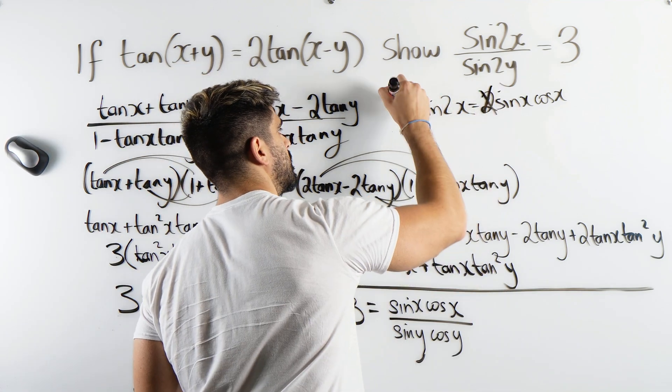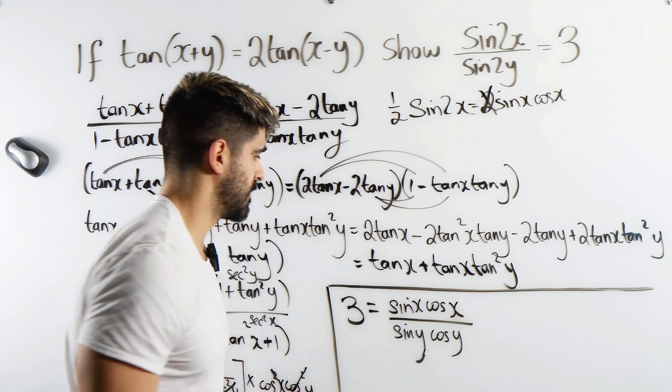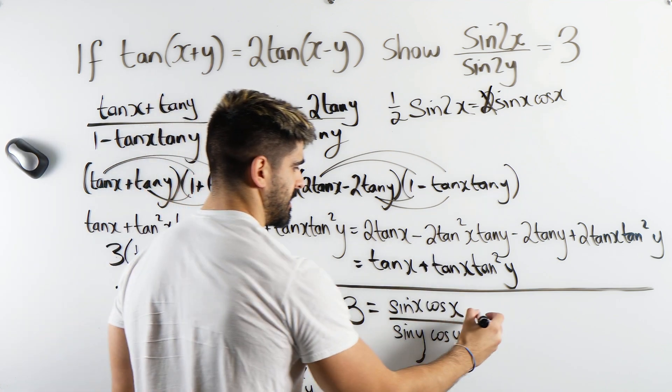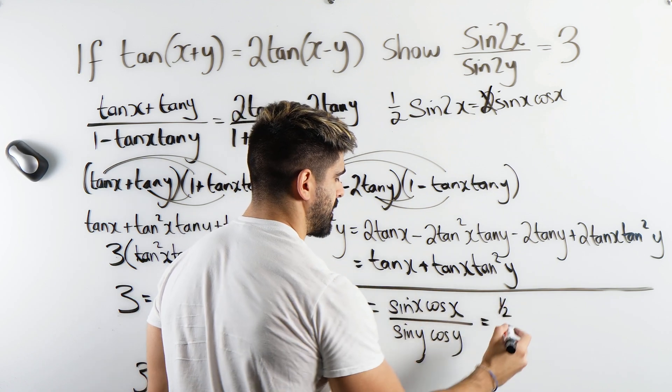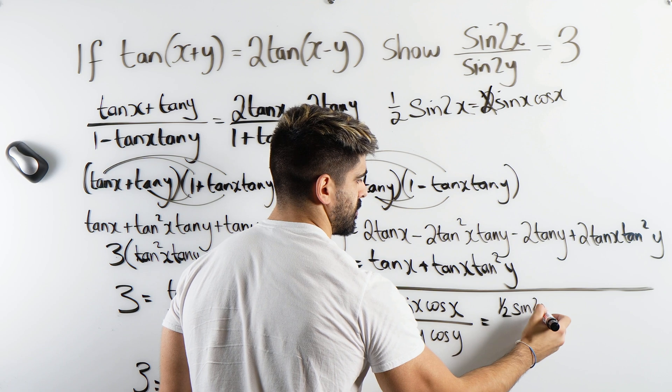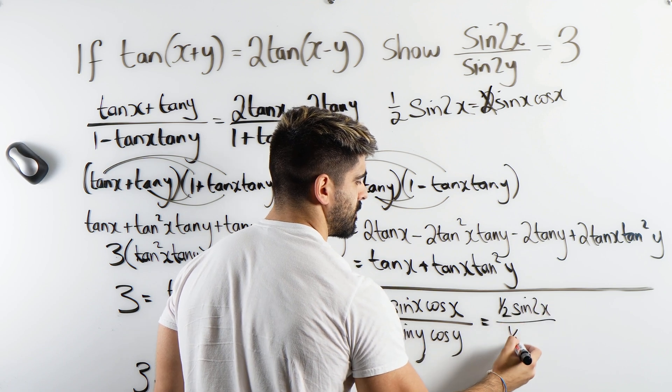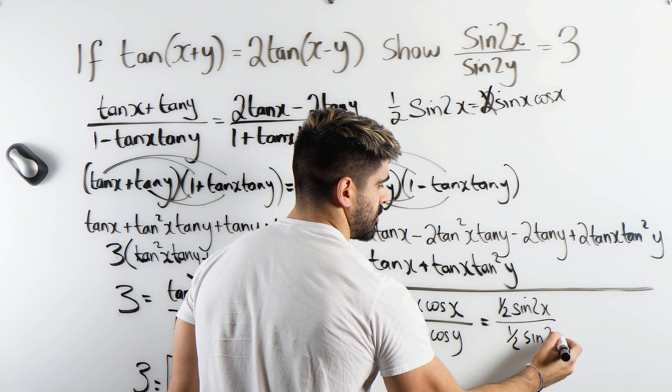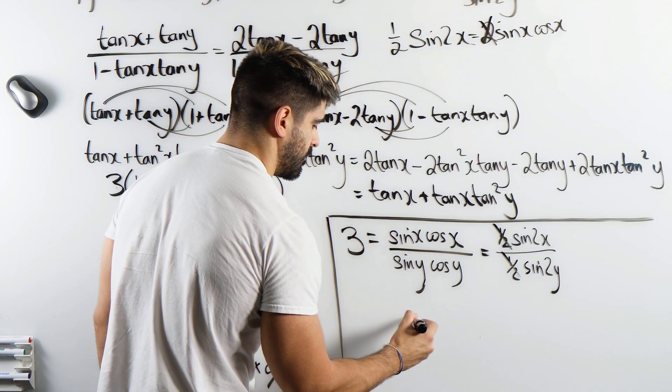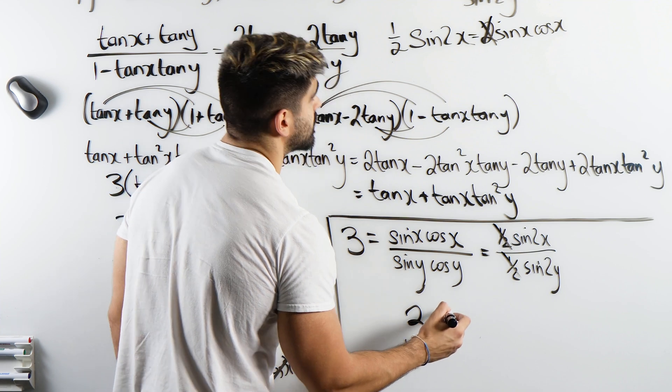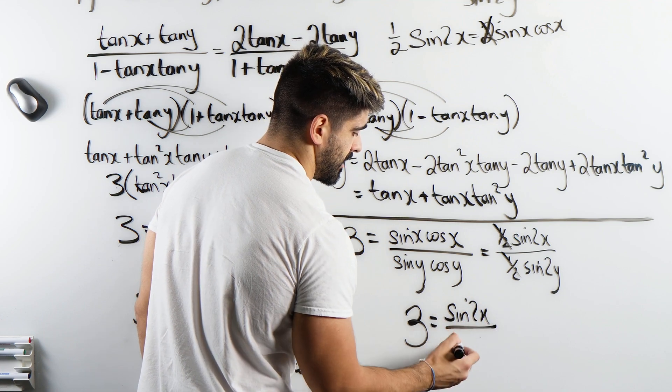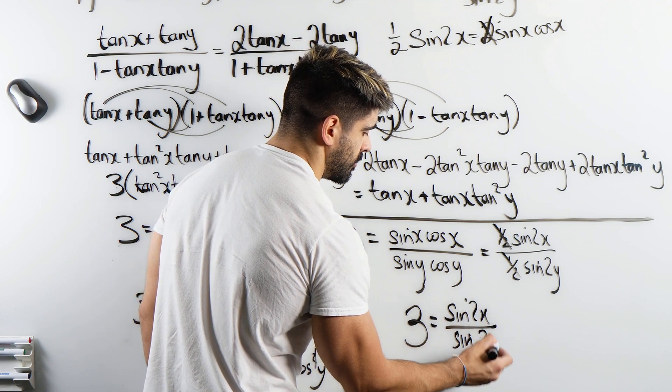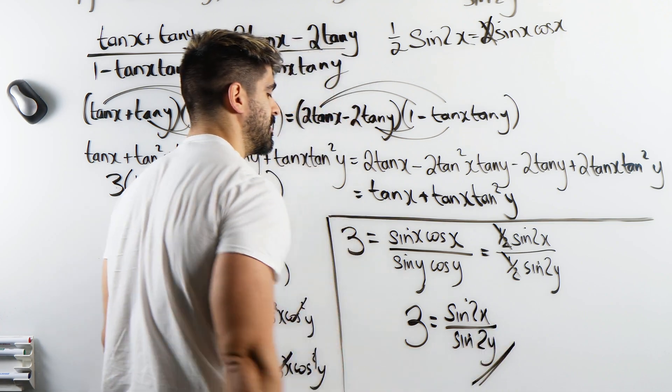So we divide by 2, we'd have a half here. So both of these are a half, and then you have the double angle identities. So sine 2x divided by a half, sine 2y. Then the halves cancel, and we're left with 3 equals sine 2x divided by sine 2y. And that has been shown.